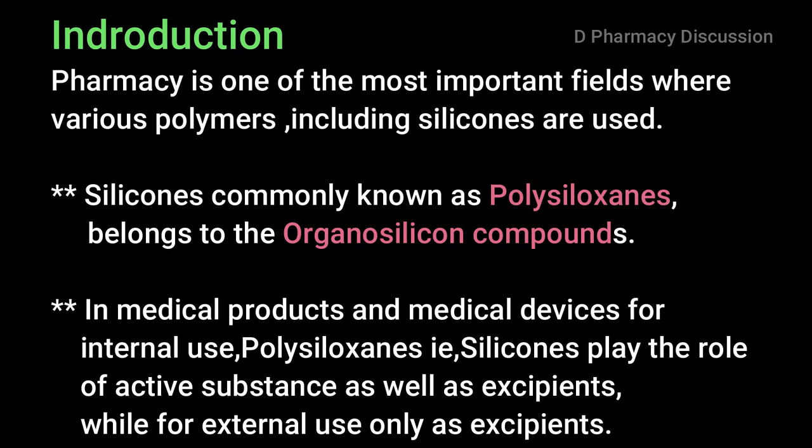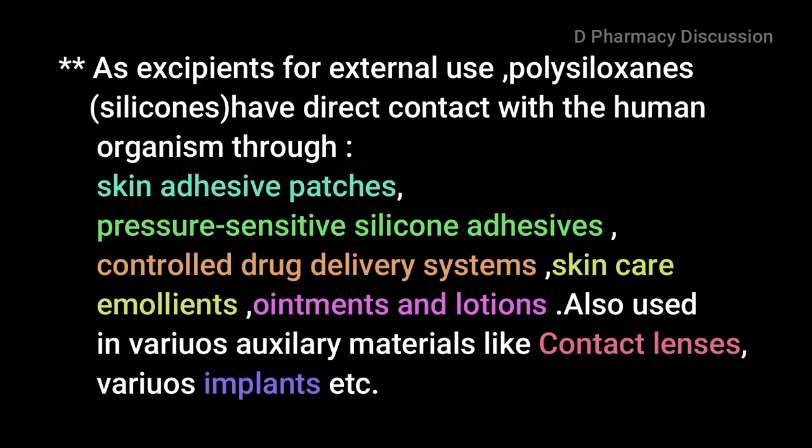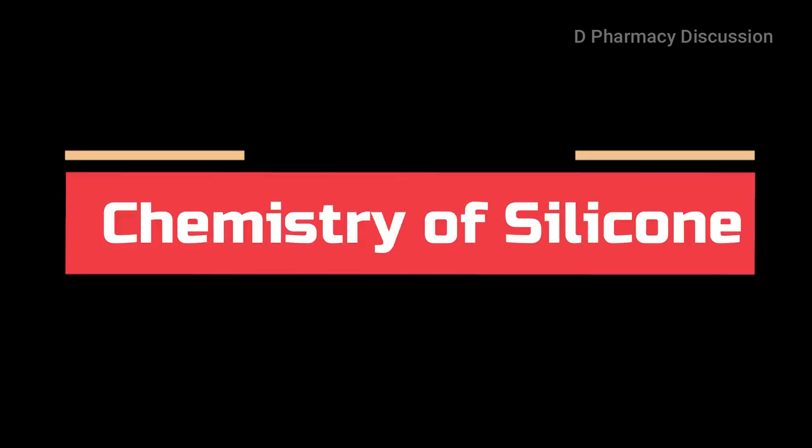Pharmacy is one of the most important fields where various polymers including silicones are used. Silicones, commonly known as polysiloxanes, belong to the organosilicon compounds. In medicinal products and medical devices for internal use, polysiloxanes play the role of active substance as well as excipients, while for external use only as excipients — through skin adhesive patches, pressure-sensitive silicone adhesives, controlled drug delivery systems, skincare emollients, ointments, lotions, contact lenses, and various implants.